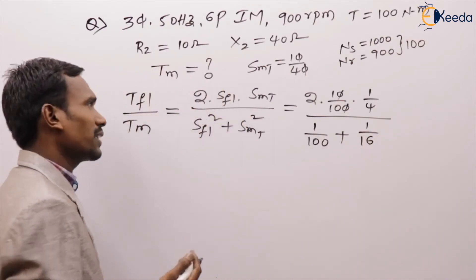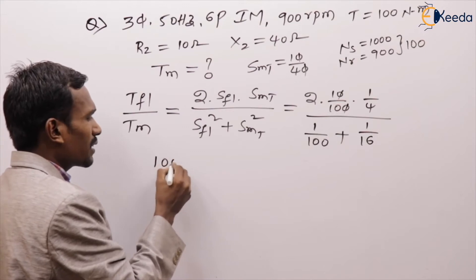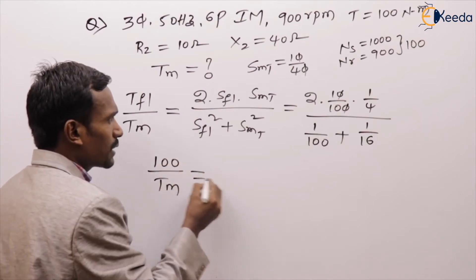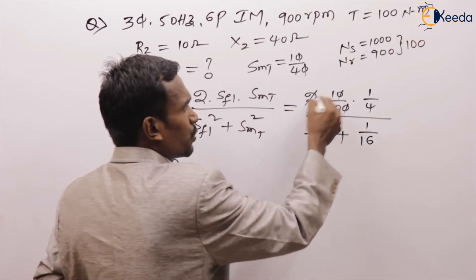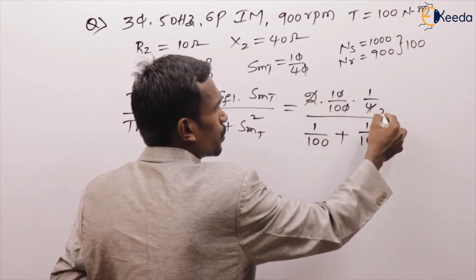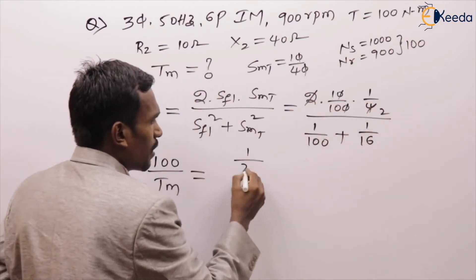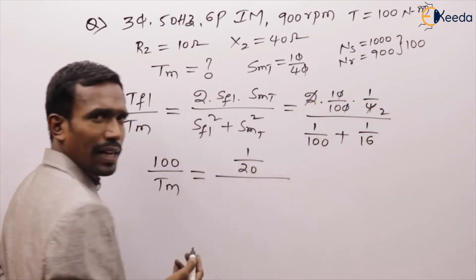The full load torque is already given as 100 Nm and we have to find the maximum torque. So: numerator = 1/20, and denominator = 1/100 + 1/16.